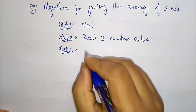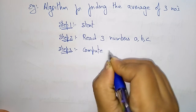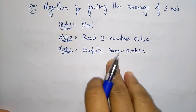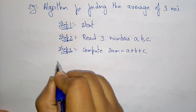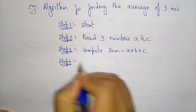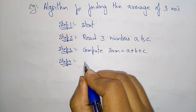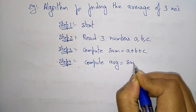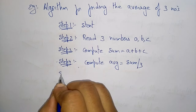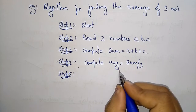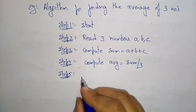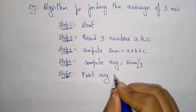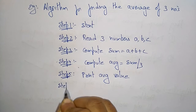Step three: compute sum = A + B + C. I am adding the three numbers and the result will be stored in sum. Step four: compute average = sum / 3. Now I have the average of three numbers stored in average. Step five: print the average value. The last step is to stop the program.